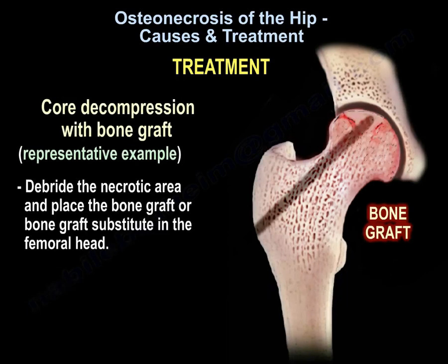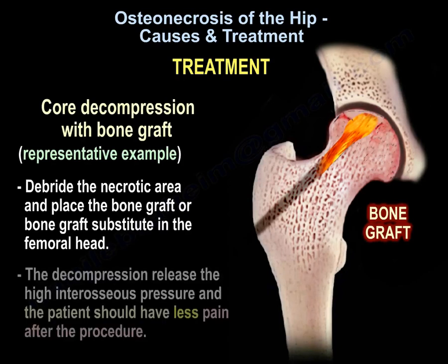This is a representative example of core decompression with bone graft. You debride the necrotic area and place the bone graft or bone graft substitute in the femoral head. The decompression will release the high intraosseous pressure, and the patient should have less pain after the procedure.